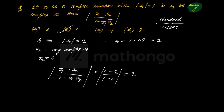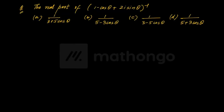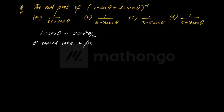Jab chaap question solve karte chalna hai apne ko. Thik hai, agla dekh. Agla kehta hai - find the real part of this. Again, you guys have done this - ismein padha hai na ki 1 minus cos ko sir kya karte hain, 2 sin square theta by 2 form mein likhte hain, aur aage solve karna shuru karte hain. Ab ismein kahin bhi bola ki theta should take a fixed value? Kya bola hai - agar theta ki fixed value ke baare mein baat nahi ki hai, that means we can take any value.